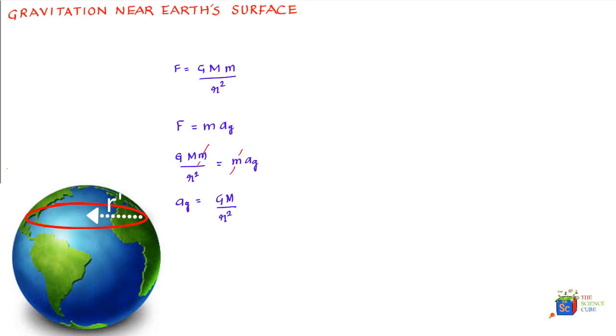This force is directed towards the center of the circle in which this particle is rotating. Of course, this would be zero at the poles because the radius is zero. Presence of centripetal acceleration implies that there has to be a centripetal force directed towards the center of the circle in which the particle is rotating. Let us see how the g value changes due to rotation of the Earth.